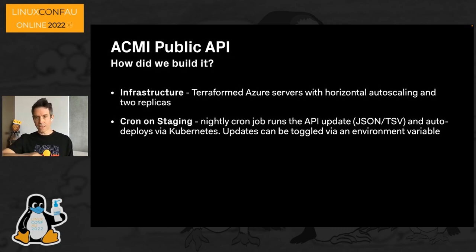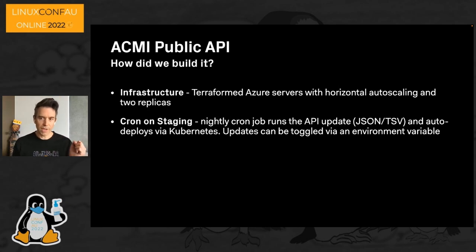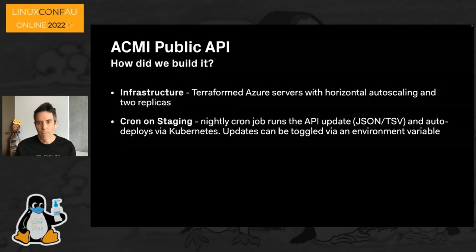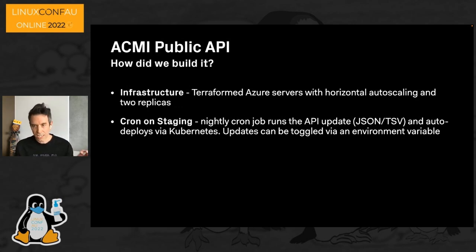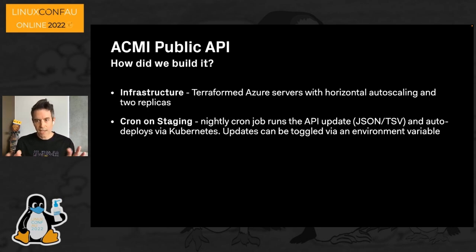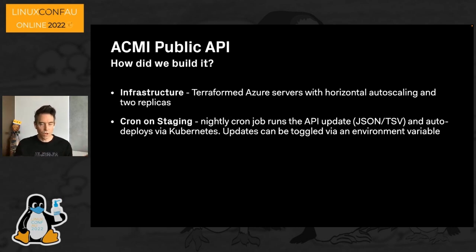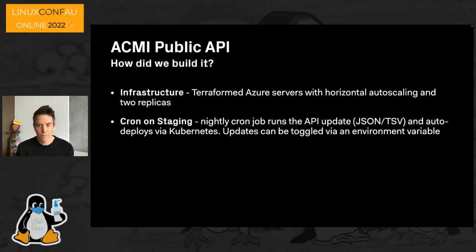For nightly updates, I realized a cron job in the public API code repo could do the job. The cron job runs code that calls our XOS private works API, downloads the JSON blobs, saves them to the file system, removes images and videos we don't have rights to, then checks for git changes. If changes are found, it pushes them back to the GitHub repo, triggering a GitHub Action to run linting and tests before deploying changes to staging. We have an environment variable via Terraform in a config map to easily toggle updates off without any code changes, just in case we have any problems.